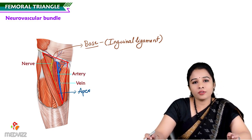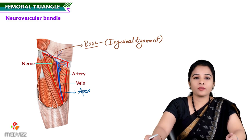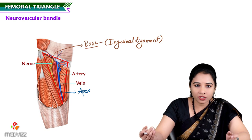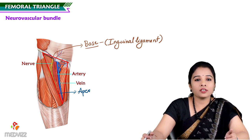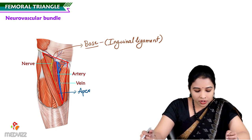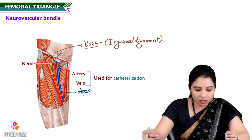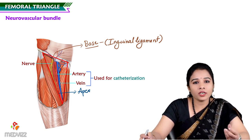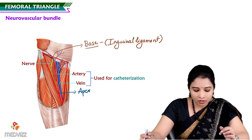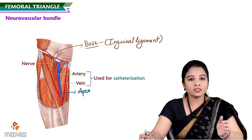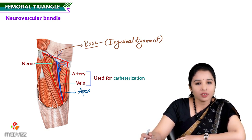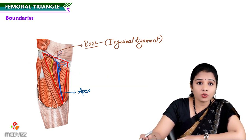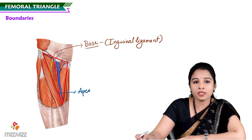The vein and artery are the femoral vessels — femoral artery and vein — which are important access points to reach the heart or brain for interventional radiologists. During any intervention to place a catheter, these two blood vessels are often chosen because they are quite large. Let's see the boundaries of the femoral triangle: it has a lateral boundary, medial boundary, base, and apex.